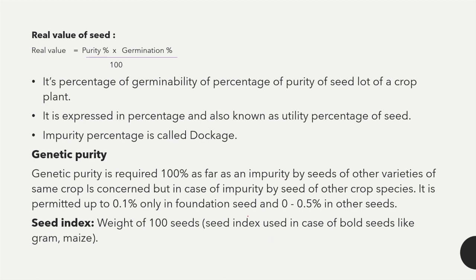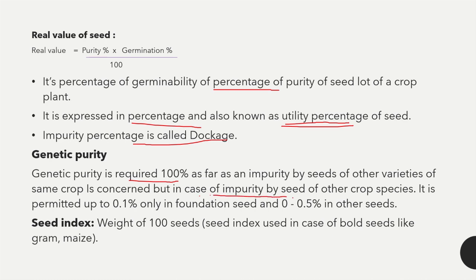The next topic is real value of seed — the percentage of germinability and purity of a seed lot of a crop plant. It is given by: purity percentage multiplied by germination percentage divided by 100. It is expressed in percentage and also known as utility percentage of seed. The impurity percentage is called dockage. Genetic purity required is 100 percent; impurity by seeds of other varieties is permitted up to 0.1 percent only in foundation seed and 0.5 percent in other seeds.